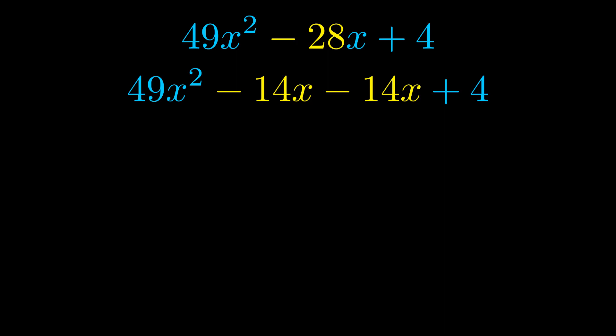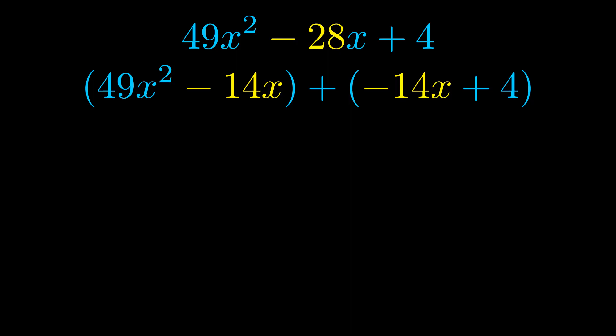Once we've done this, we go ahead and put parentheses around the first term and the last term. We do that so that we can take the greatest common factor out of both terms. We can see the greatest common factor is now outside in green.